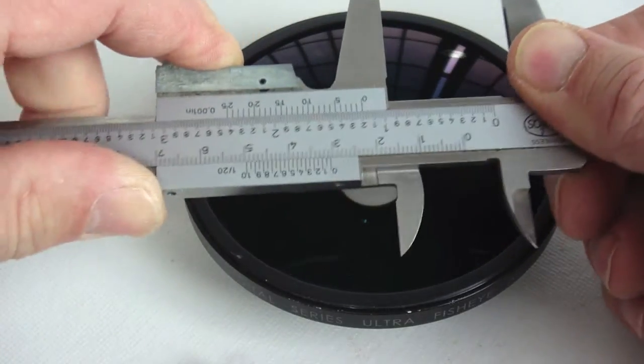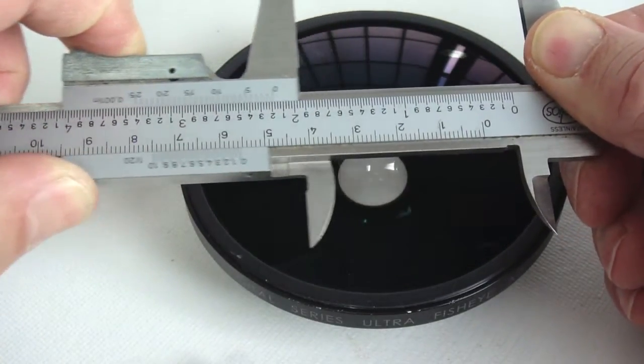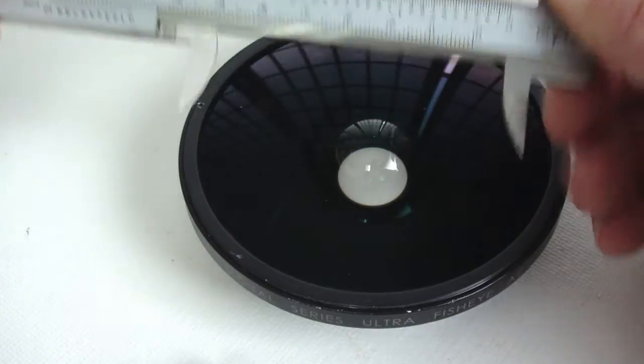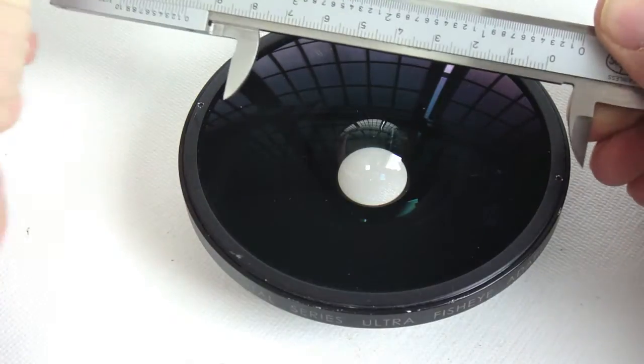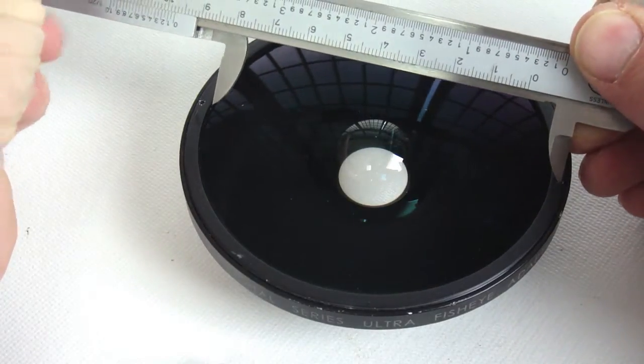A suitable substitute for this task is the sliding caliper ruler. Using the jaws for measuring inner dimensions, set them so that they are at the proper spanner distance.